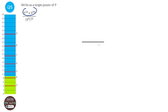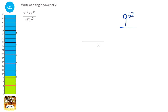We look at the numerator and denominator separately. In the numerator, 9 to the power of 16 times 9 to the power of 46 — when you have two powers of the same base, you add the indices: 16 plus 46 equals 62, giving 9 to the power of 62. In the denominator, a power inside and outside the bracket means we multiply them: 9 to the power of 40. Dividing two powers of the same base means subtracting indices: 62 minus 40 gives 9 to the power of 22.